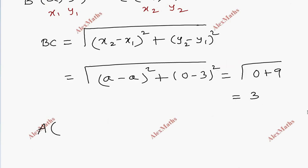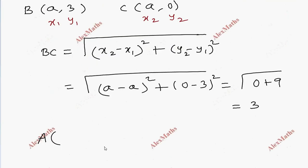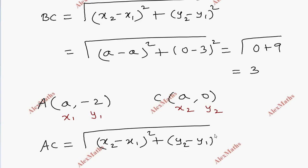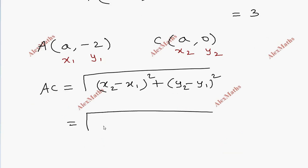Now AC. Point A is a, minus 2, and point C is a, 0. AC equals root of x2 minus x1 whole square plus y2 minus y1 whole square. Root of a minus a whole square plus 0 minus minus 2 whole square. First term 0, 2 square is 4, root 4 is 2. Now this is 2.